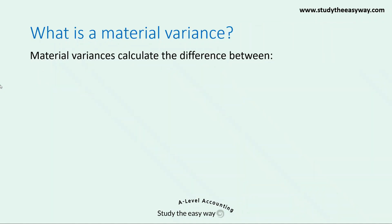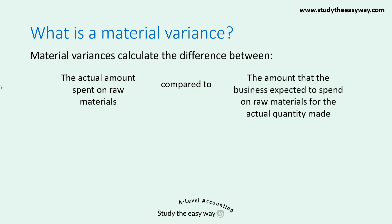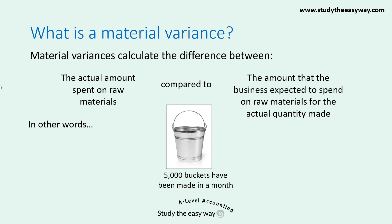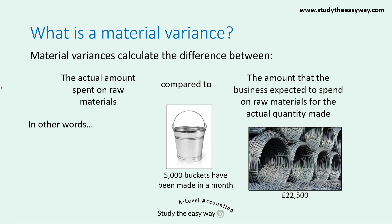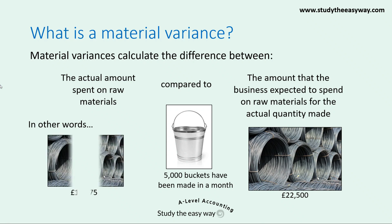So what is a material variance? A material variance calculates the difference between the actual amount spent on raw materials, and compares this to the amount that the business expected to spend on raw materials for the actual quantity of finished goods that were made. For example, a business makes 5,000 buckets in one month. The business expected to spend £22,500 on steel, but actually ended up only spending £14,375. The difference between these two amounts is the total material variance.